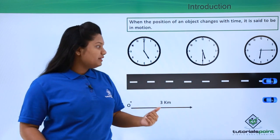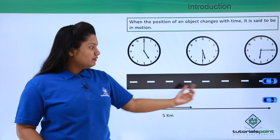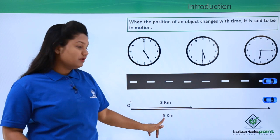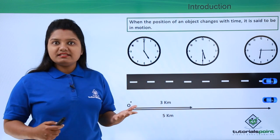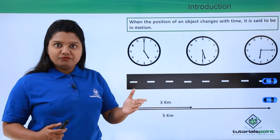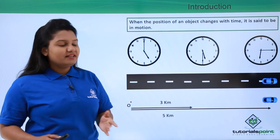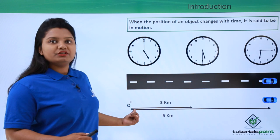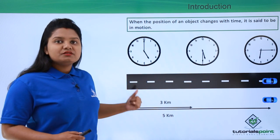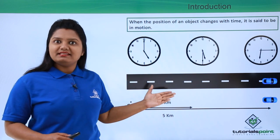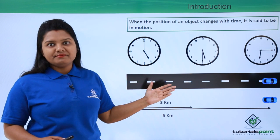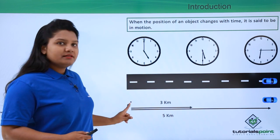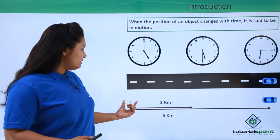The car continues moving, and at 6:15 the distance between the initial point O and the final point is five kilometers. We can say that the body has moved since its final position is five kilometers away from the initial position or the starting point. We can precisely say the car was moving, and this was only possible when we considered point O as the starting point.